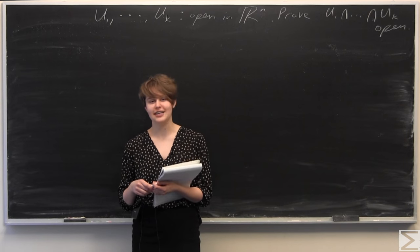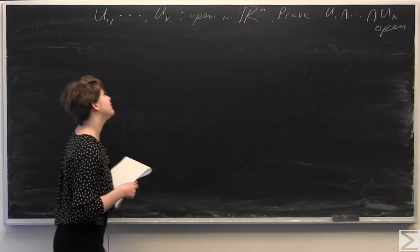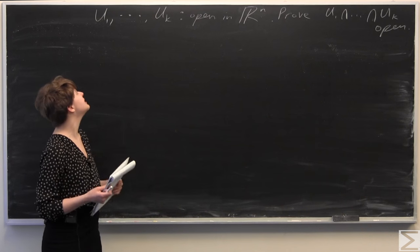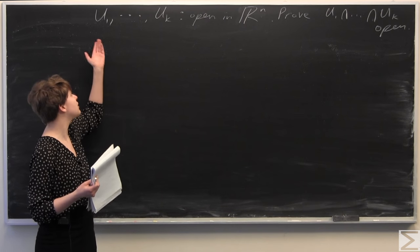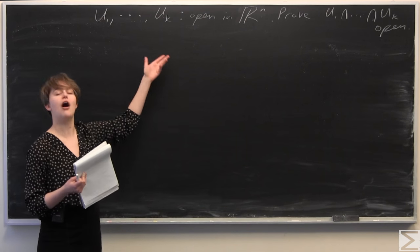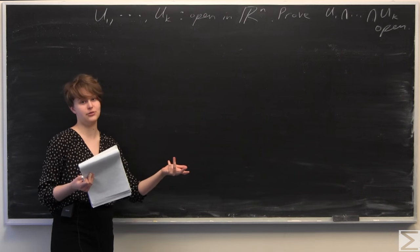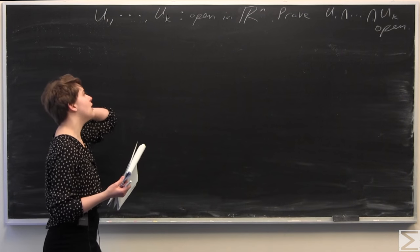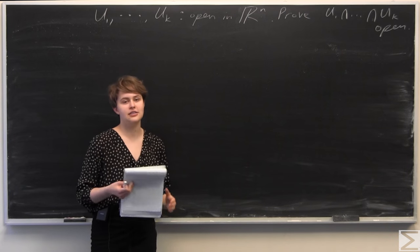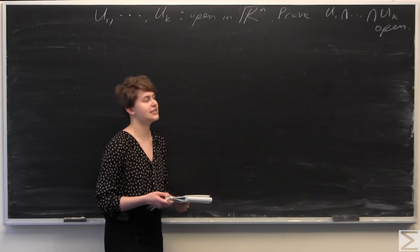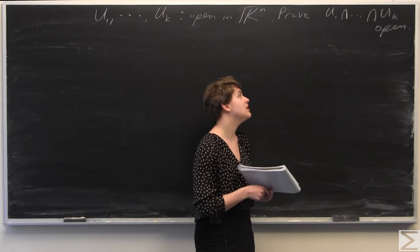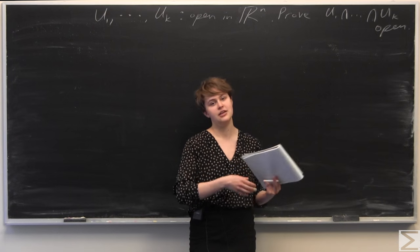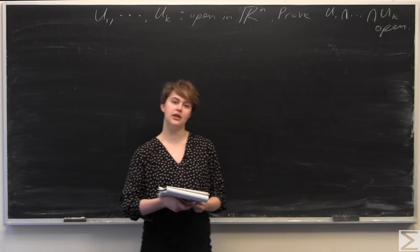This week's Problem of the Week asks you, given a finite collection of open sets — open sets denoted u1 through uk, where k is not equal to infinity — so all these sets are open in Rn, and the question is asking us to prove that the intersection of this finite group of sets is also open in Rn.